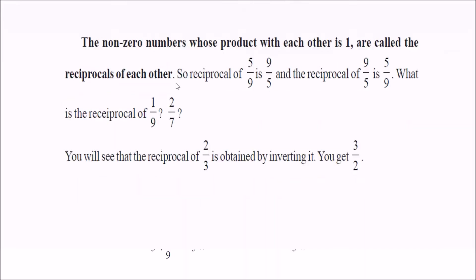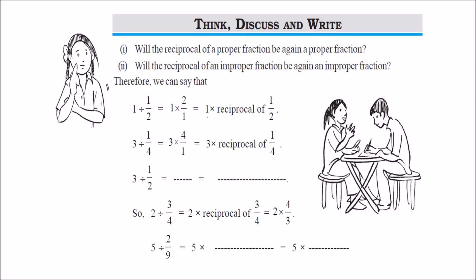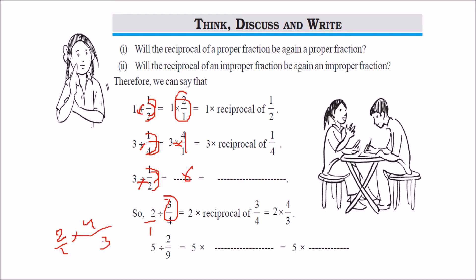For 5 by 9, we change the numerator to denominator and denominator to numerator. So p by q becomes q by p — this is the reciprocal. When we multiply these two we get 1. So, 1 divided by 1 by 2 is essentially 1 into 2 by 1. And 3 divided by 1 by 4 is 3 into 4 by 1. Also, 2 divided by 3 by 4 means 2 by 1 into reciprocal of that, which is 4 by 3, giving 8 by 3.